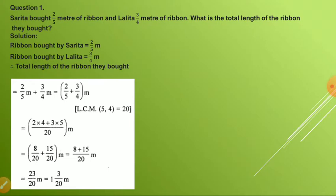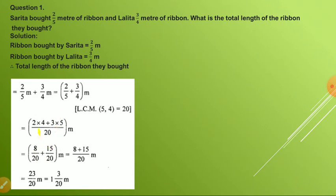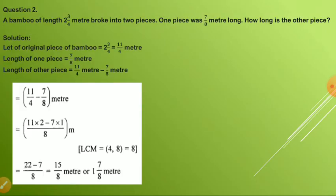Just like if you have a 2 rupee coin and a 5 rupee coin, the total money you have is 2 plus 5. Similarly, 2/5 meter of ribbon and 3/4 meter of ribbon — the total length of ribbon will be found by adding them. The LCM of 5 and 4 is 20, so you multiply accordingly. By solving this, you will get the answer 1 whole 3/20.